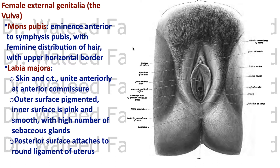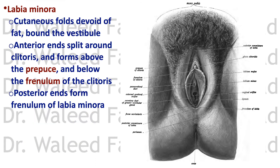The labia majora is a fold of skin and connective tissue that unites anteriorly and posteriorly. The outer surface is pigmented, the inner surface is pink, devoid of hair, and smooth with a high number of sebaceous glands. The posterior surface of the labia majora attaches to the round ligament of the uterus, which ends by joining the back of the labia majora.